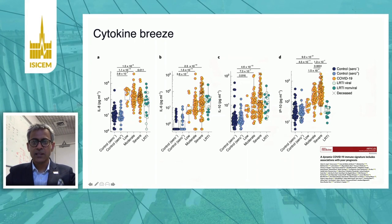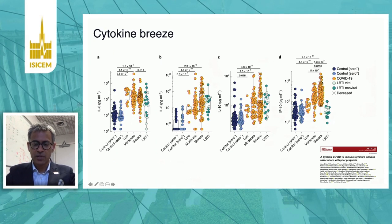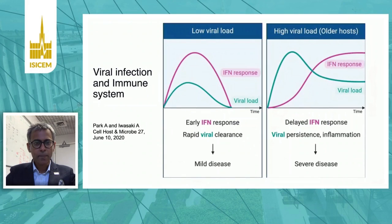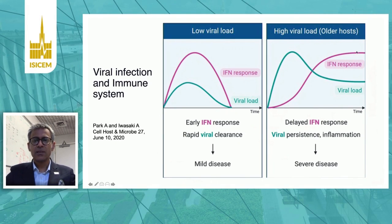An interesting cytokine seldom reported in the literature is IP-10, also known as CXCL10, which is an interferon-related signature. Patients with severe disease have far higher IP-10 concentrations, and those who die have even higher IP-10. In viral infections, an early interferon response leads to rapid viral clearance and mild disease. However, in patients with higher viral load or older hosts, the interferon response is delayed and sustained, resulting in cytokine excess, severe disease, and inflammation.